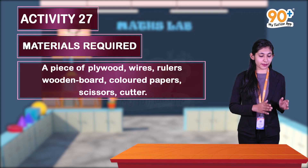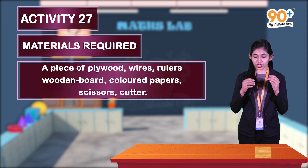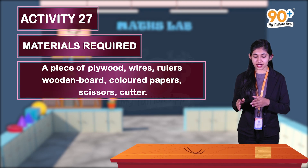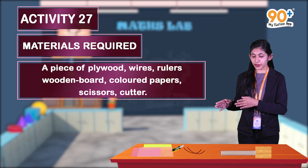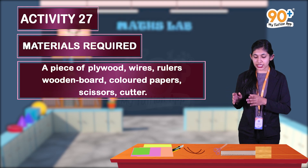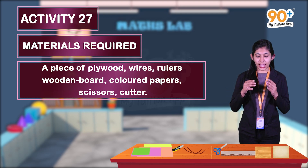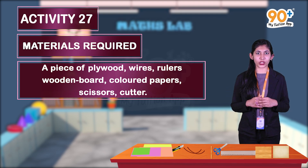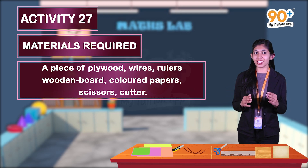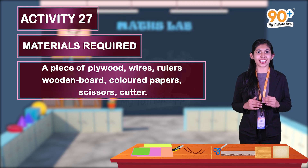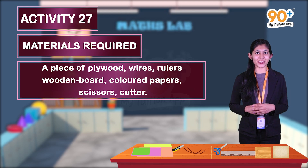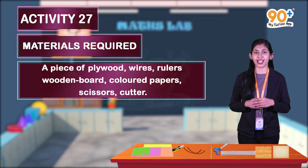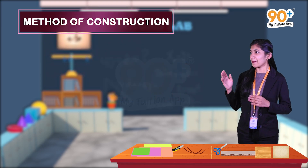Let us see what materials are needed for performing this activity. We need a piece of plywood, wires, rulers, cutter, colored papers, scissors, a wooden board, and a wooden rod. Using these materials, let us construct the equipment required for performing this activity.